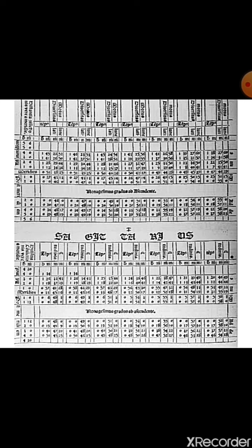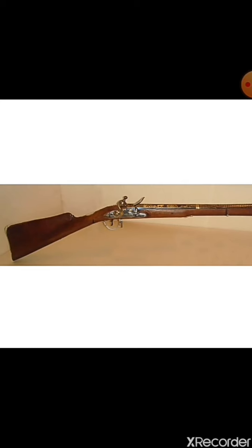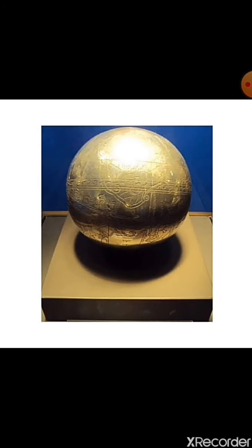Humayun constructed an astronomical observatory near Delhi. During Akbar's era, a multi-shotgun was invented for the first time. The most notable astronomical invention of the Mughal era was the Celestial Globe — a device that shows the apparent positions of stars.